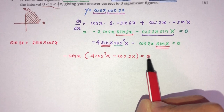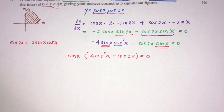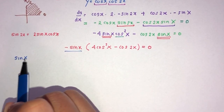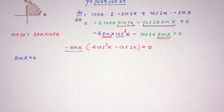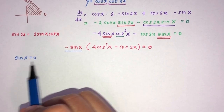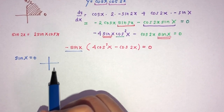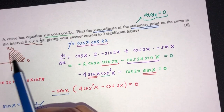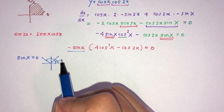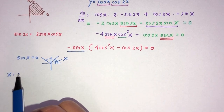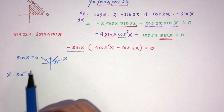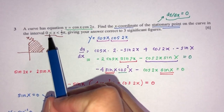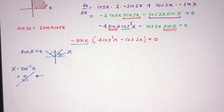We can now solve them for the values of x. For the first factor, sine x equals 0. Using ASTC, sine is zero in the first and third quadrant boundaries, but we only care about the first quadrant. x equals sine inverse of 0, which is 0. But the question doesn't include 0, so this value is not valid.